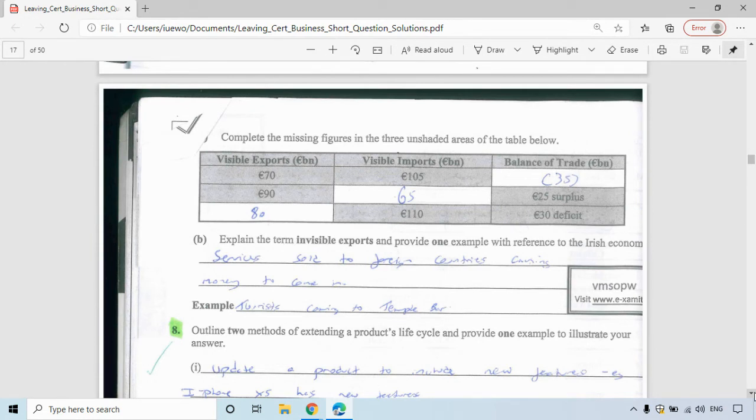Explain the term invisible exports and provide one example with reference to the Irish economy. Exports are goods leaving the country, so these are invisible—that means services. Because it's invisible, it's a service. If it was visible, it would be a good. These are services sold to foreign countries causing money to come into the country. For example, tourists coming to Ireland are using Irish services and bringing money into the country.